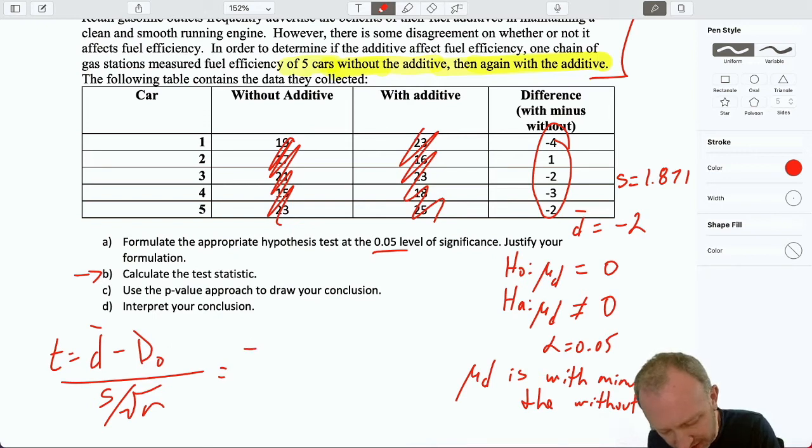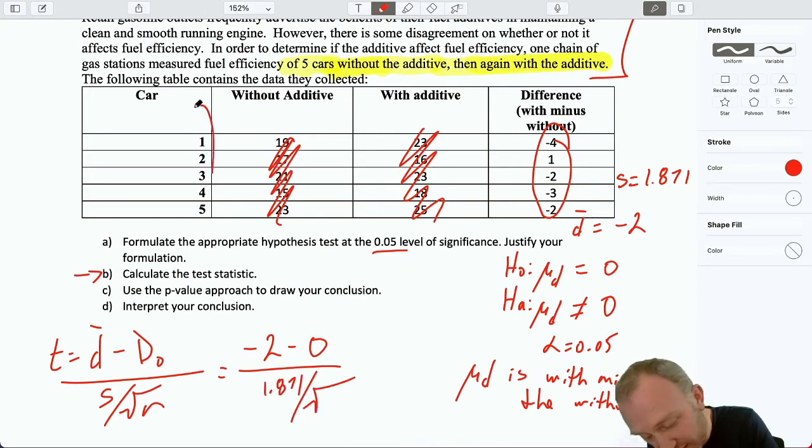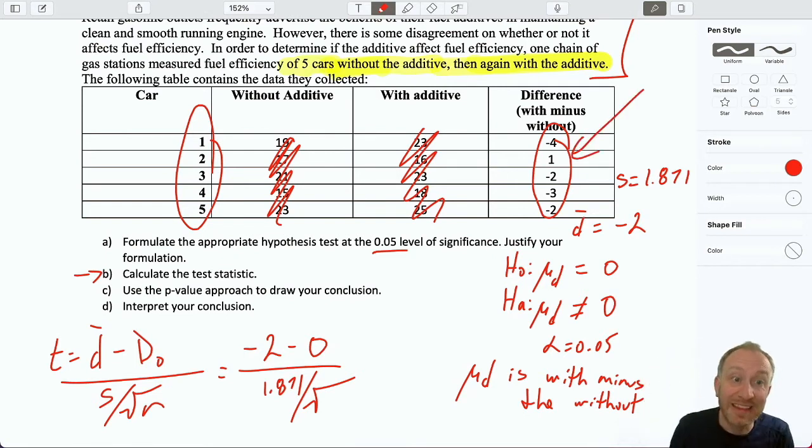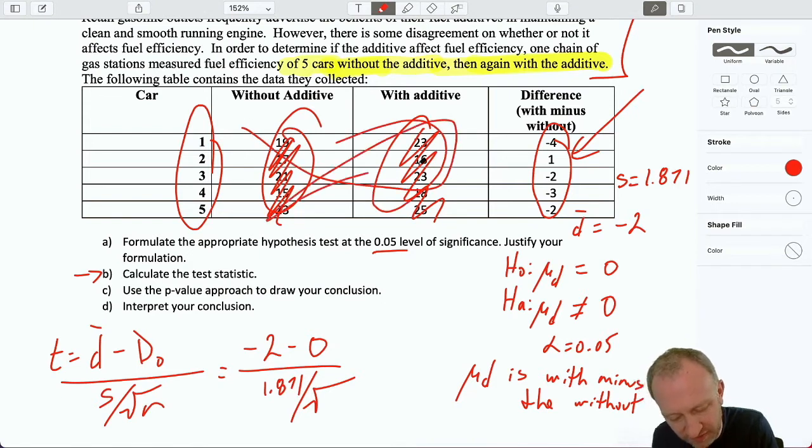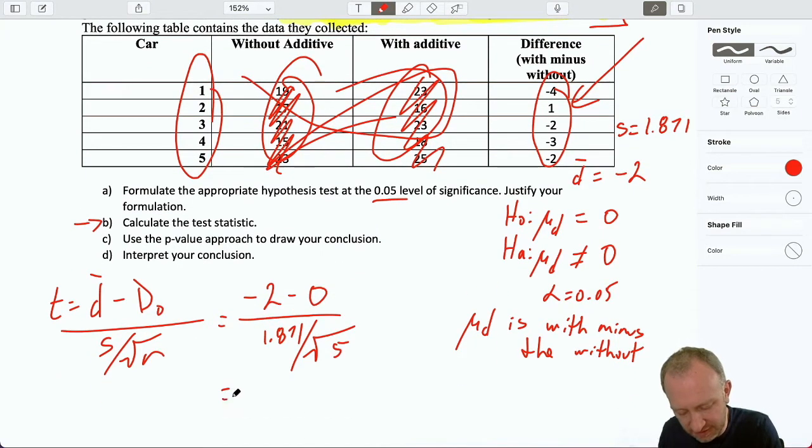And now I have my test statistic. This is 1.871 over the square root of just 5. All right? Remember, because that's our sample. We're just working with the differences. It's not 5 plus 5. Nope. I don't even need that stuff anymore. It's just 5. So, here our test statistic is going to be 2 divided by 1.871 divided by root 5. And that gives me negative 2.39.